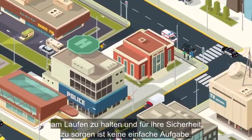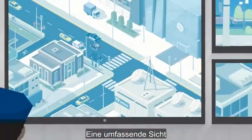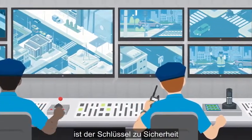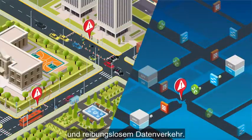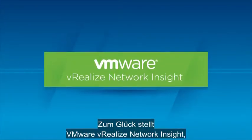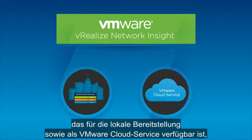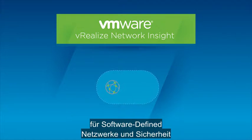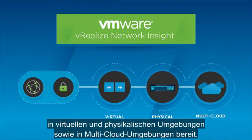Keeping a busy environment moving and secure is no simple task. Having comprehensive visibility into all the moving parts of the environment is key to implementing security and keeping the traffic running smoothly. Fortunately, VMware vRealize Network Insight, available for on-premise deployment as well as a VMware cloud service, provides intelligent operations for software-defined networking and security across virtual, physical and multi-cloud environments.